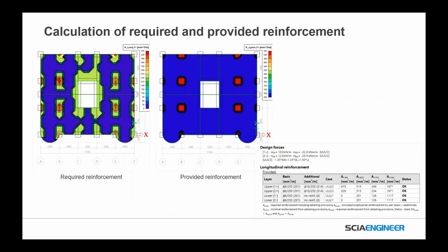When calculating longitudinal or shear reinforcement, we can see both the required reinforcement and what we've provided. We've chosen a basic reinforcement that we're providing, and we can see the reinforcement around the columns — maybe the punching shear reinforcement — and the regular reinforcement on the rest of the slabs. We can see this graphically, or with the forces and reinforcement provided in the detailed output.